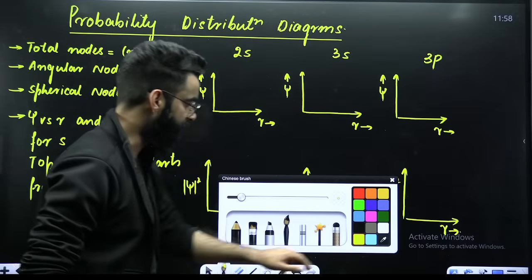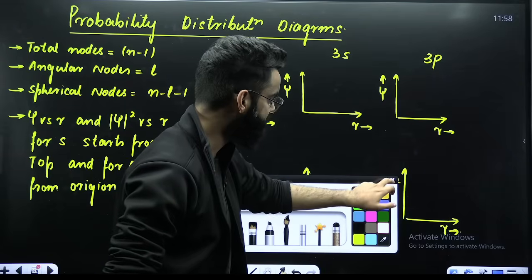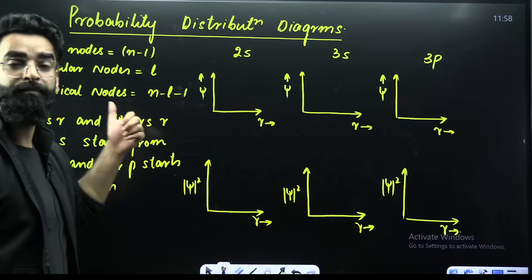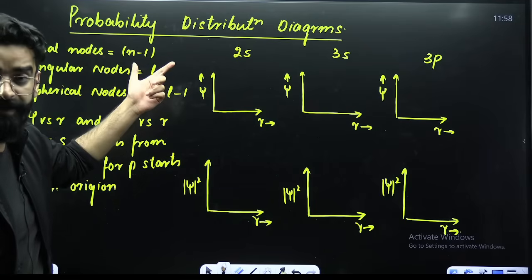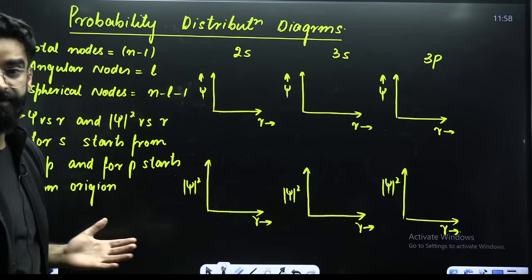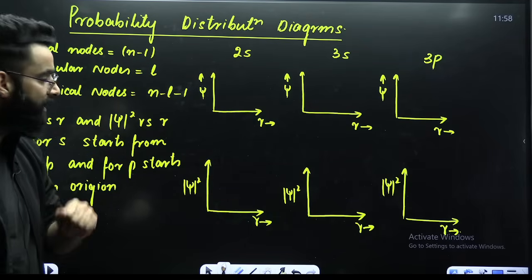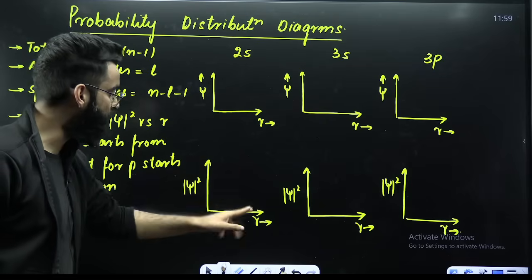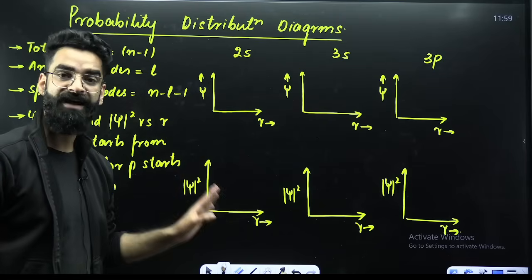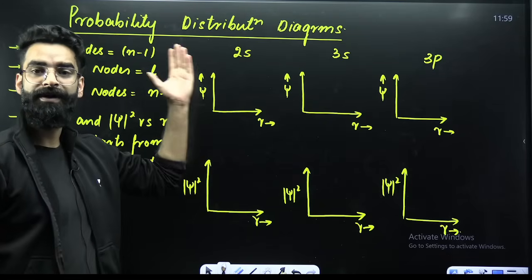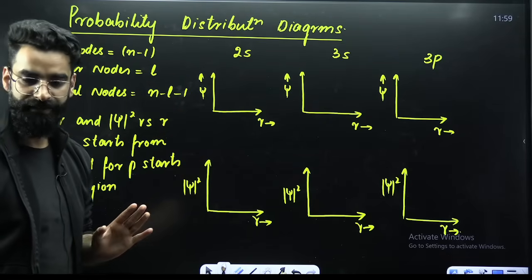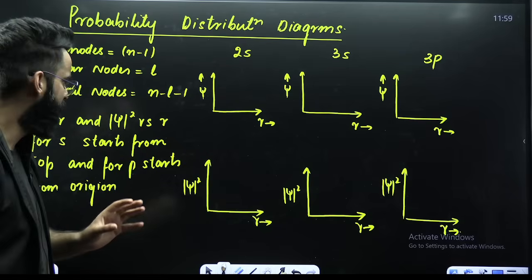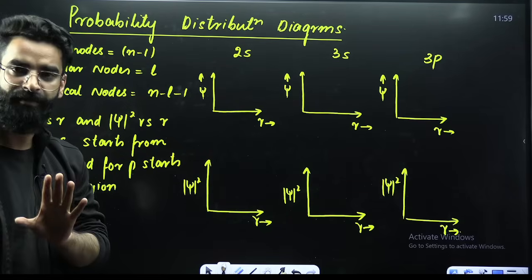The first type of question that will be asked regarding the probability distribution curves — you'll be asked psi versus R and psi² versus R graphs for your S and P orbitals. How do you make them? It's very simple; there are a few things you need to remember.